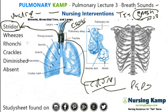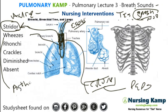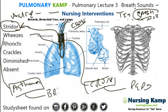Stridor is always acute. The next one is wheezes. They're best heard on expiration, and wheezes are still upper airway. Wheezes are important because the action is usually wheezes are relative to asthma — please see my COPD asthma lecture for more on that. The treatment is generally bronchodilators. Of course, the patient will always be in high Fowler's position.